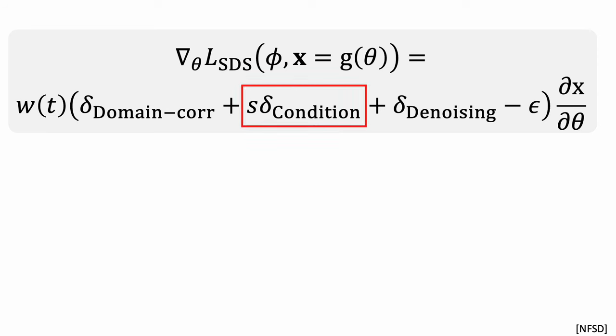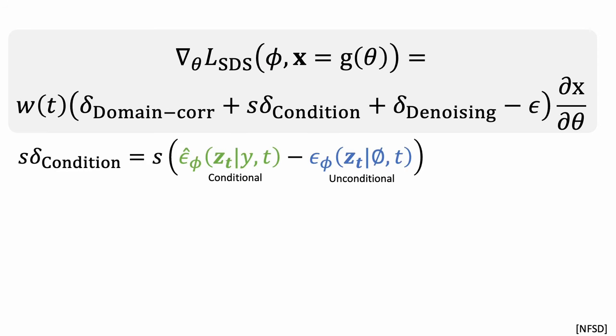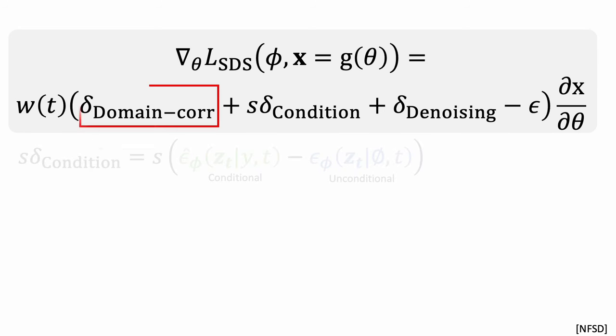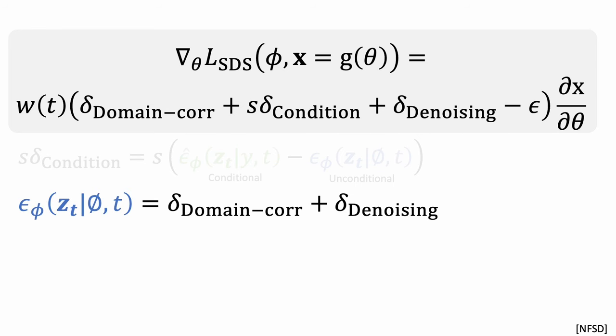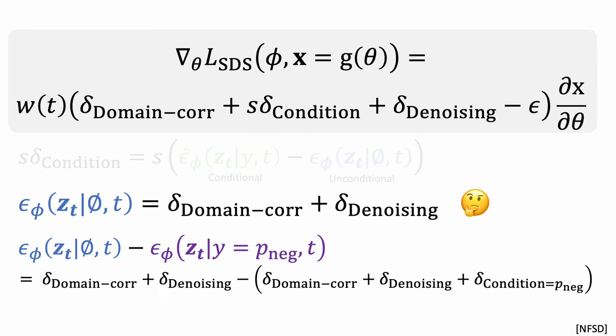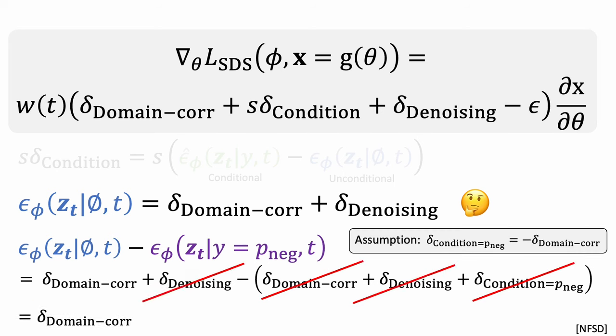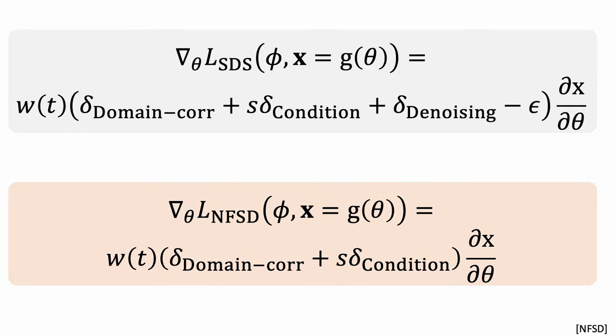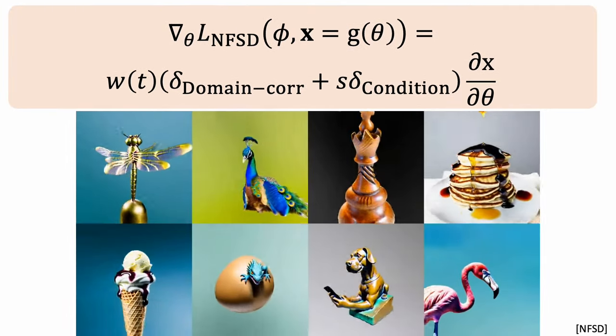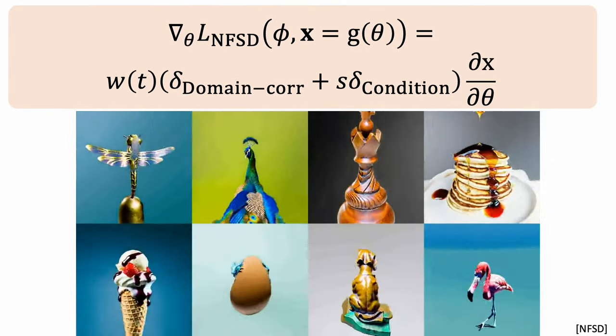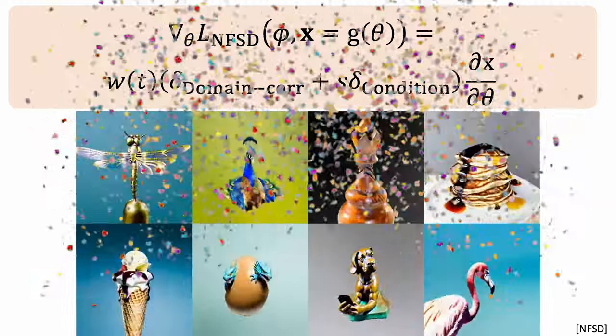For the condition, this is just the difference between the noise estimated from the conditional model and the unconditional model. The domain-correction part is tricky. We can compute an estimated noise from the unconditional model. We don't know which components are for domain-correction and which components are for denoising. In this paper, they propose to extract domain-correction components using negative prompts. With this simple change, we see solid improvement in the appearance of the 3D models. No more saturated colors or blurry content.